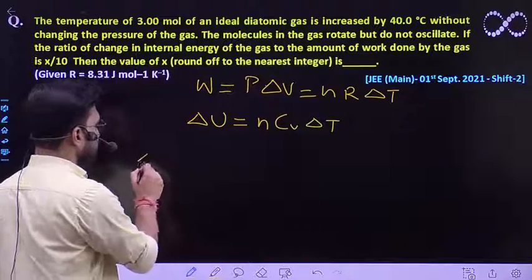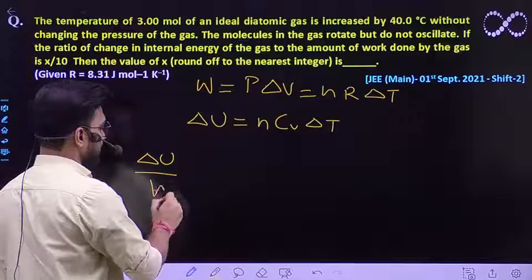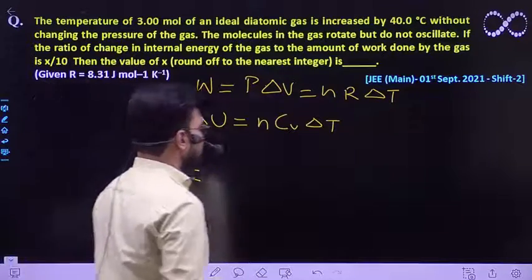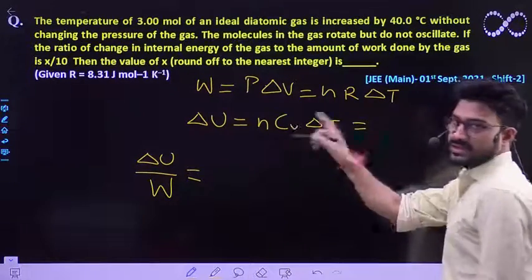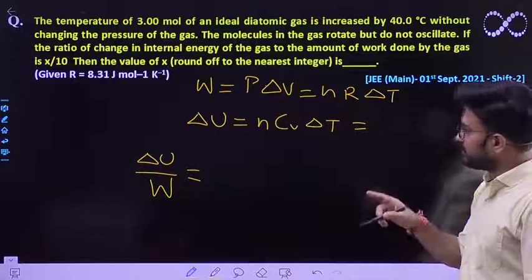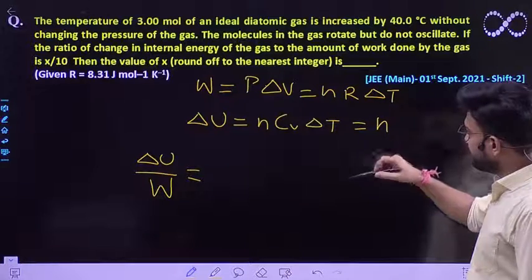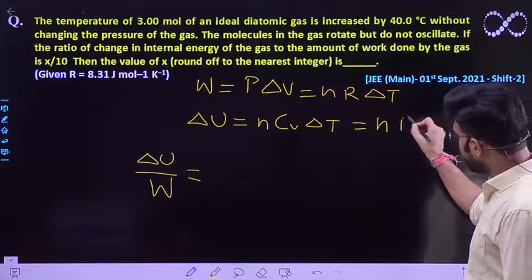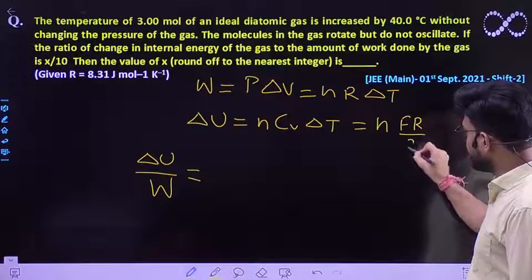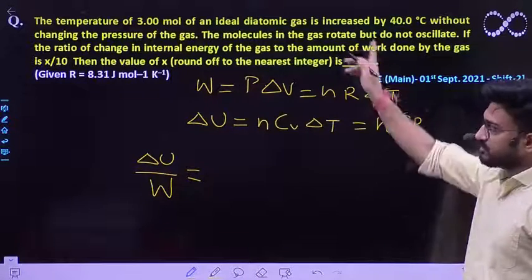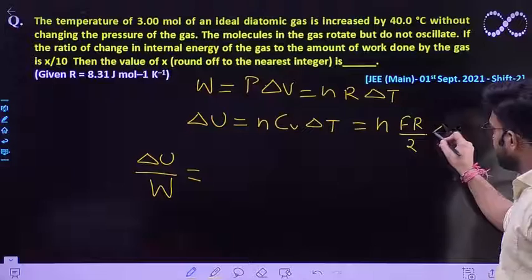So you have to find out the ratio of del U by W. Since CV is for diatomic molecules, so it can easily be written as fR by 2 where f is the degree of freedom of the diatomic gas into delta T.